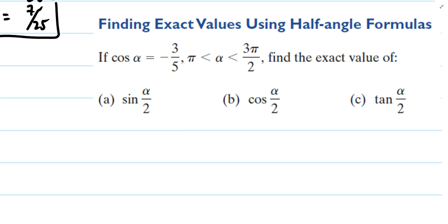Alright, so in this video I'd like to use the half-angle identities to help solve some practice problems. In this particular example, we're told that cosine of some unknown angle measure is negative 3 fifths.